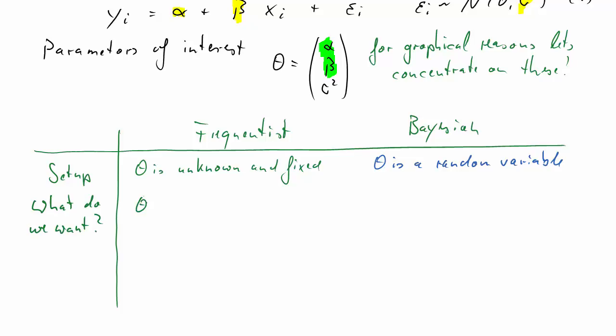What do we want? A frequentist basically wants one estimate of theta, theta hat, something they would call the best estimate, however best is defined, the best estimate of the unknown but fixed theta. We are after one value. That makes sense because we think there is really one true value.